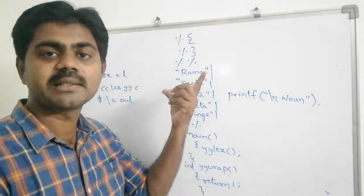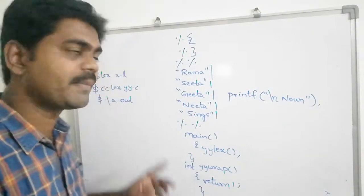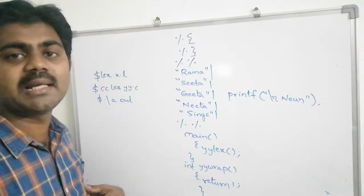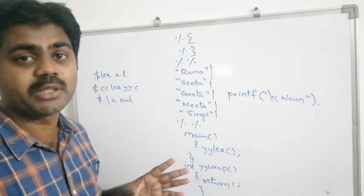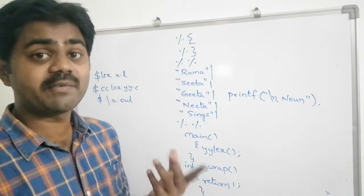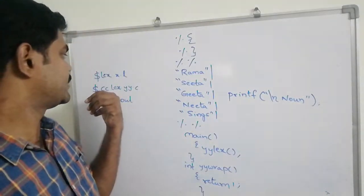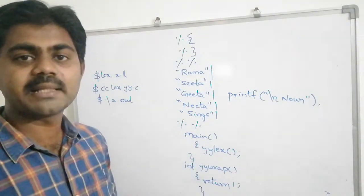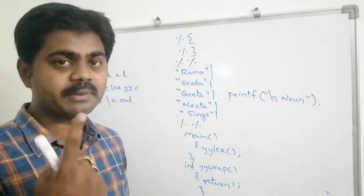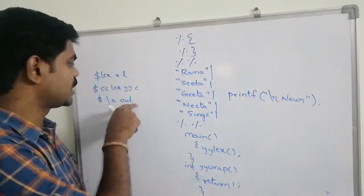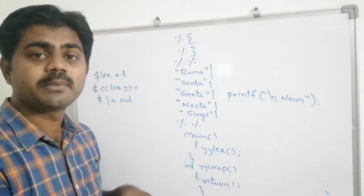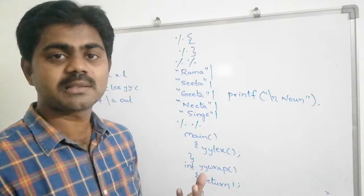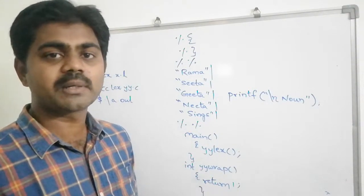To execute, the command is: dollar lex x.l. This generates lex.yy.c. Then we run: cc lex.yy.c — cc stands for C compiler — and we get the a.out executable file. Then dollar ./a.out: for this executable, if you provide an input string, you get a stream of tokens. This is a typical simple Lex program.